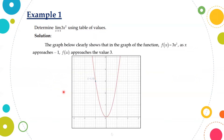The graph clearly shows that in the graph of the function f(x) equals 3x squared, as x approaches negative 1, f(x) approaches the value 3. Therefore, we can now conclude that the limit of 3x squared as x approaches negative 1 is 3.